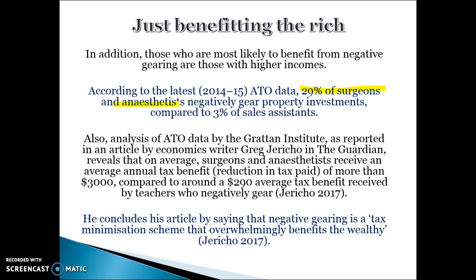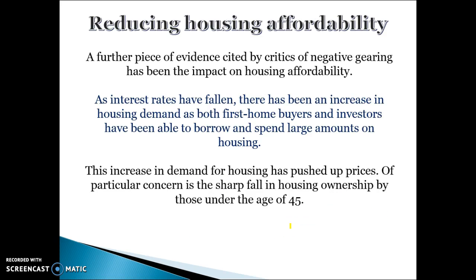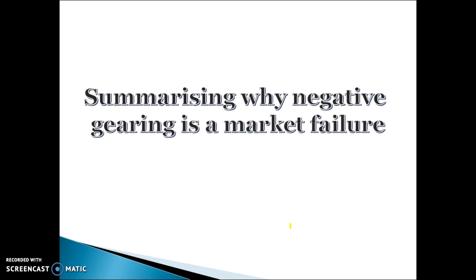A further piece of evidence — one commentator concludes that negative gearing is a tax minimisation scheme that overwhelmingly benefits the wealthy. Critics also claim that negative gearing has had a really bad impact on housing affordability. As interest rates have fallen and demand for housing from first home buyers has increased, people can't get into the market. Investors are buying all the houses, increasing prices, and not allowing first home owners into the market, which has significantly reduced efficiency.